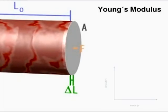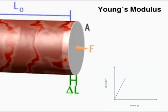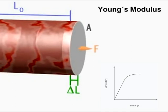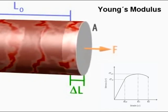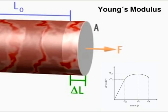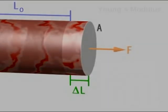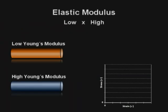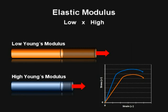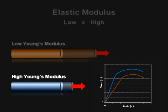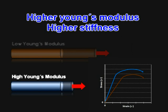Young's modulus, also called the tensile elastic constant, is calculated as the slope of the linear region of the measured stress versus strain graph of a material. A high elastic modulus means the specimen stretches less and is thereby stiffer. Stiffness is a structural property and Young's modulus is a material property.